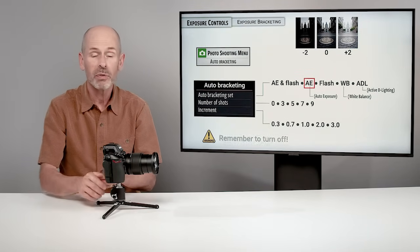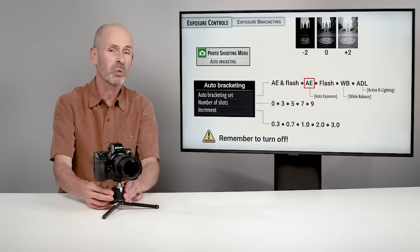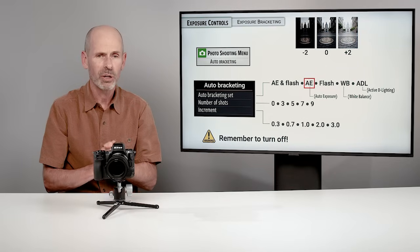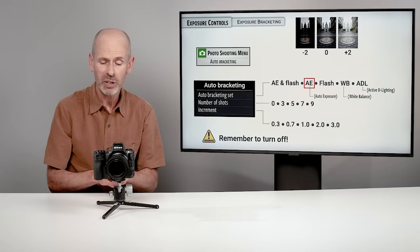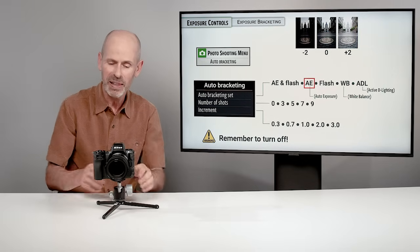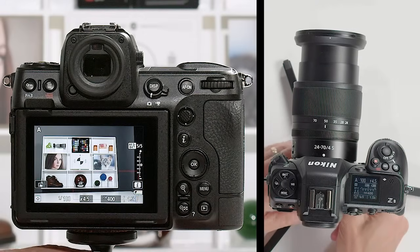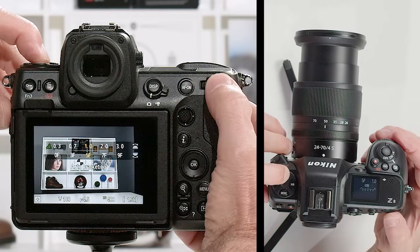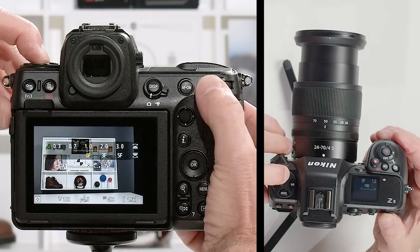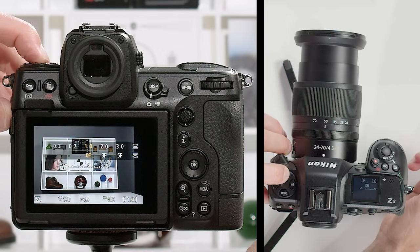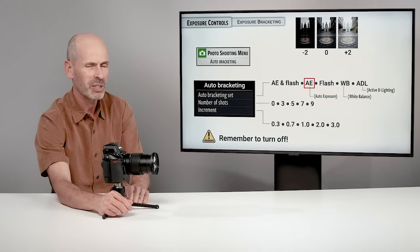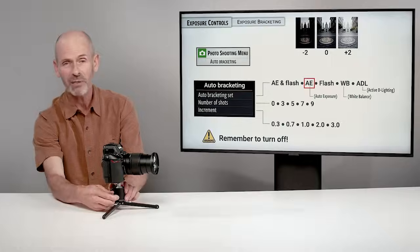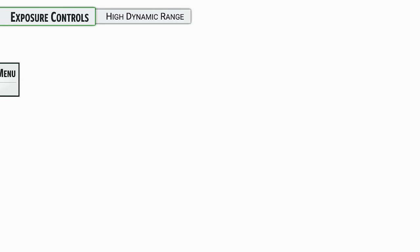Bracketing is great for HDR photography or just ensuring a correct exposure. The most important thing: remember to turn bracketing off when done. You'll notice 'OF' appears in the menu, which stands for zero frames — or it could be 'off' with a missing letter — either way it means it's turned off.